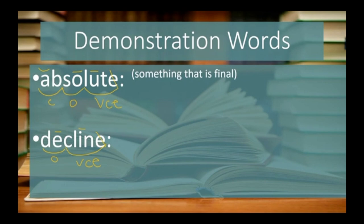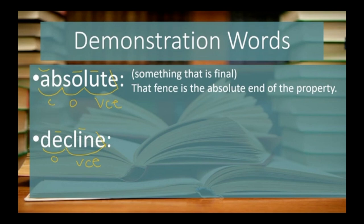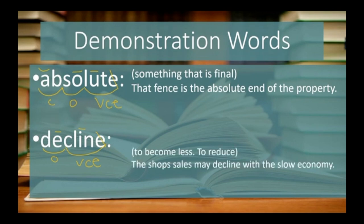Absolute means something that is final. A sentence could be: that fence is the absolute end of the property. For the word decline, the meaning is to become less or to reduce. For instance: the shop sales may decline with the slow economy.